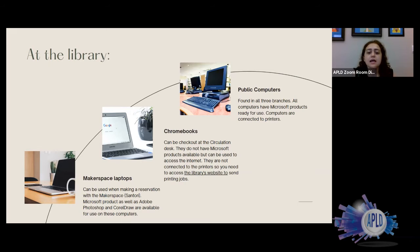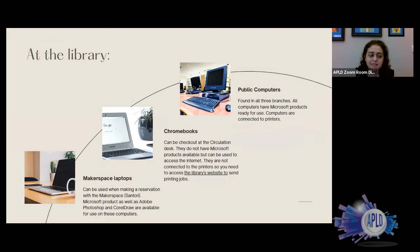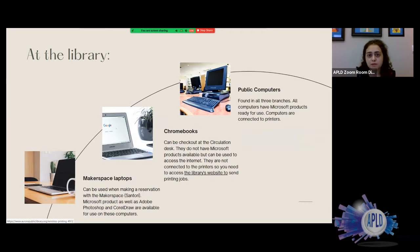You can check out a Chromebook at the circulation desk. It's mainly for using the internet — checking email or doing online searches — rather than using Microsoft products. If you want to print from a Chromebook, it's not directly connected to the printer so there are a few extra steps. Someone at digital services can help you, and you would go through the library's website. There's a link in the presentation that will take you to the place on the library's website where you would send what you want to print.